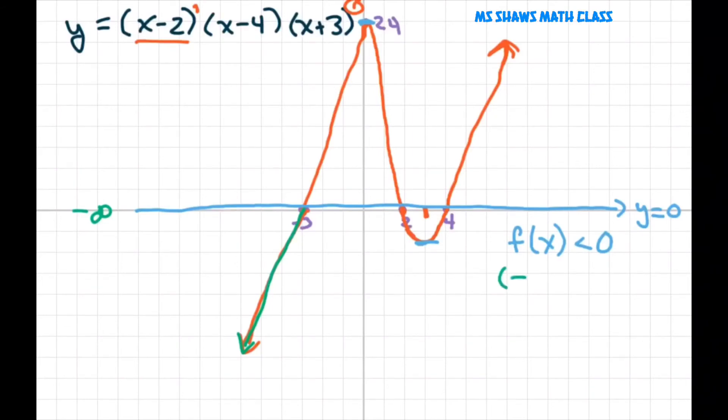So it's negative from negative infinity to negative 3 along this line on the x. And it's also negative right here below from 2 to 4.